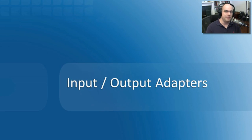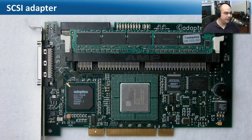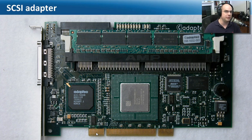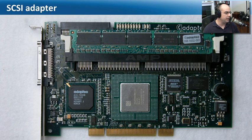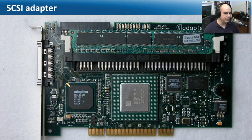Audio and video are one type of input and output from our computer, but there are other input-output adapters to be aware of. For instance, this is a PCI adapter — you can actually see 'PCI' written on the device itself. You should now be able to look at an adapter interface and recognize whether it is PCI, PCI Express, or AGP. This one happens to be a SCSI adapter. For SCSI disks, we need something that can communicate with SCSI connections. It has an internal SCSI connector for drives and also an external SCSI connector, communicating back and forth to the computer over this PCI interface.